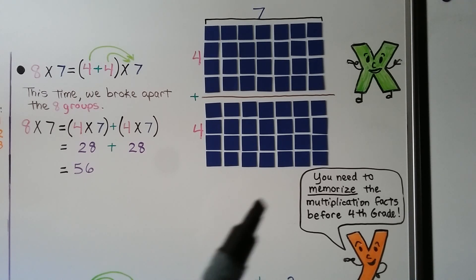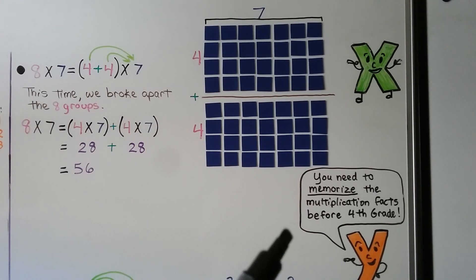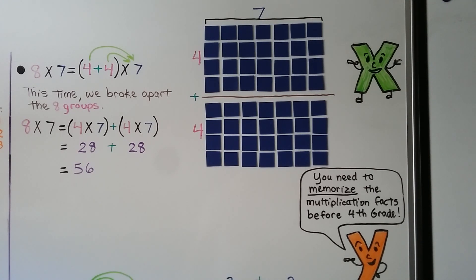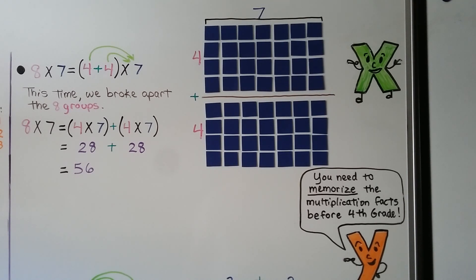Make sure you memorize all of your multiplication facts through 12 before 4th grade — you want to know your 12 times table and all the ones lower. You can start with the easy ones: memorize the 0 times table and the 1 times table first. Then memorize the 2s and the 5s, then the 10s. Then go back and memorize the 4s, 6s, 7s, 8s, and 9s.